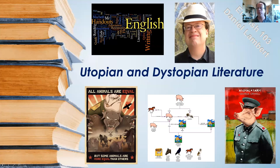Hello, this is English 103. My name is Daniel Lambert, and I would like to talk with you today about the differences between utopian and dystopian literature. We will be reading George Orwell's novel Animal Farm this semester, and I consider Animal Farm to be an example of dystopian literature.